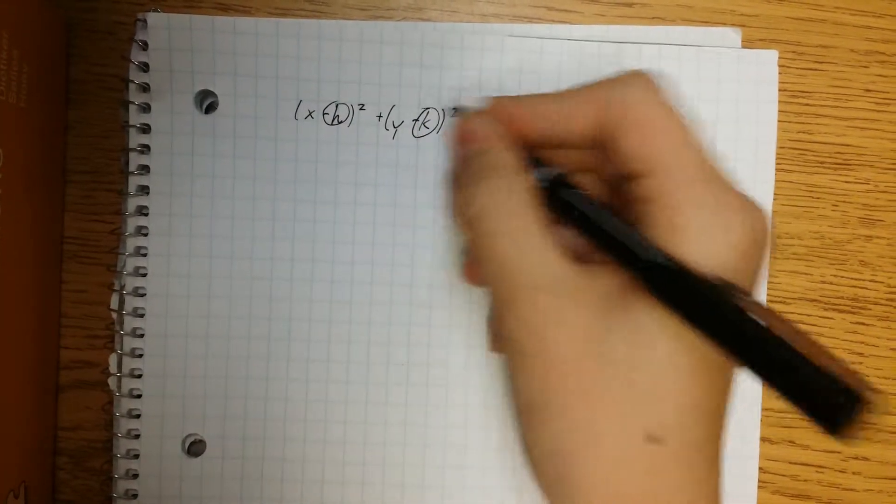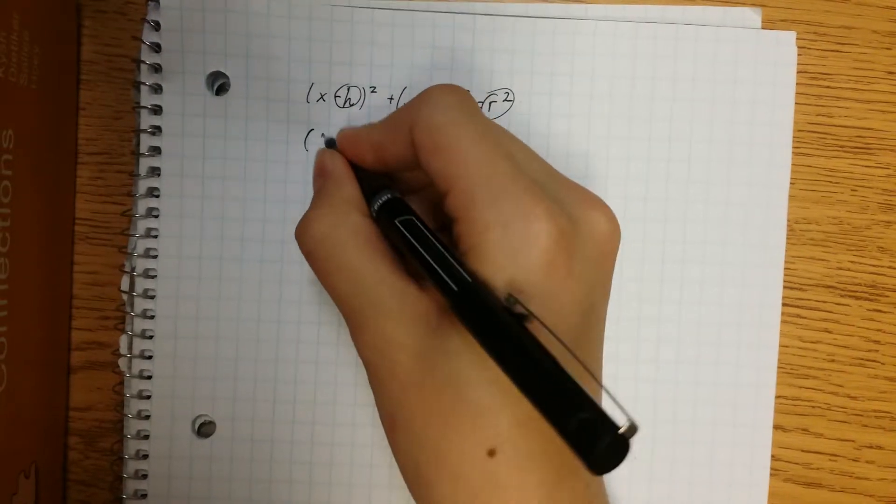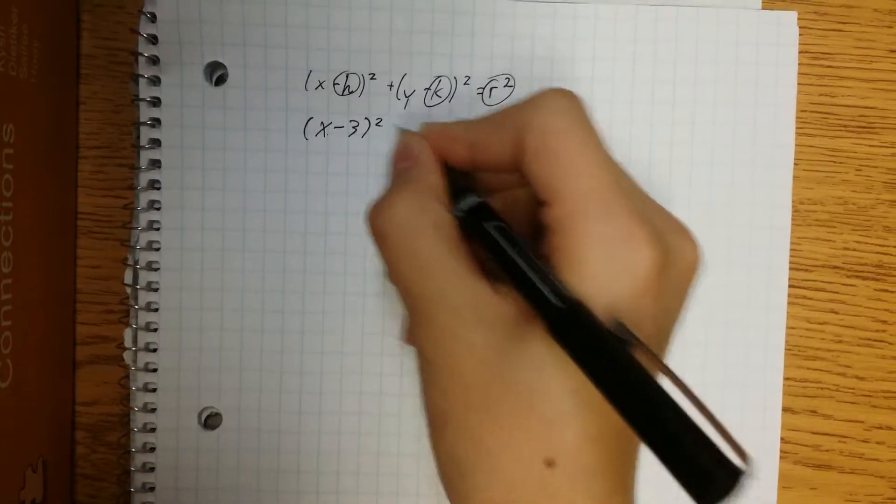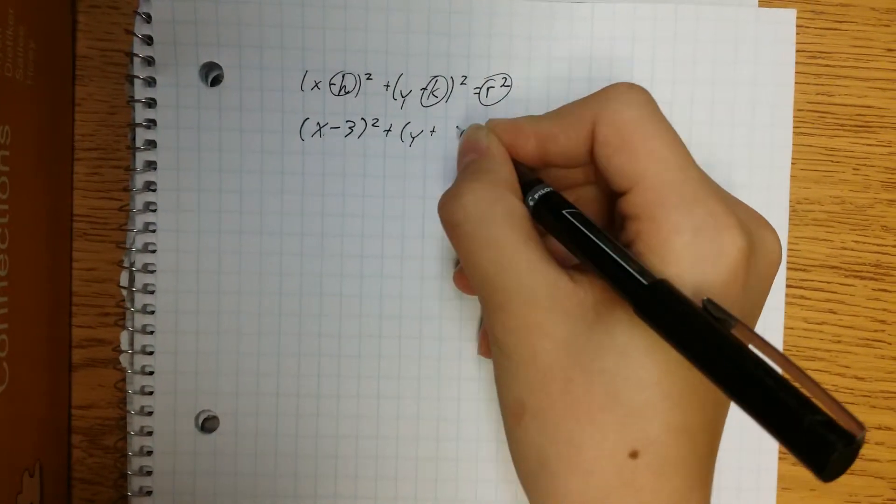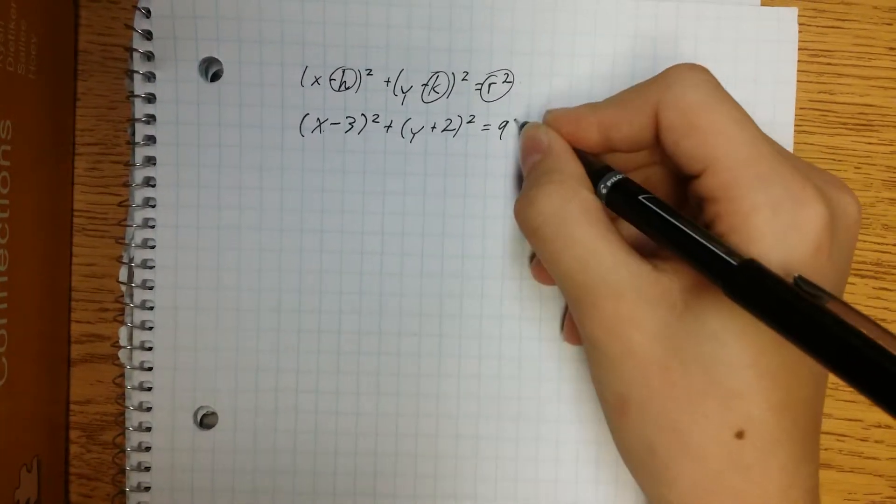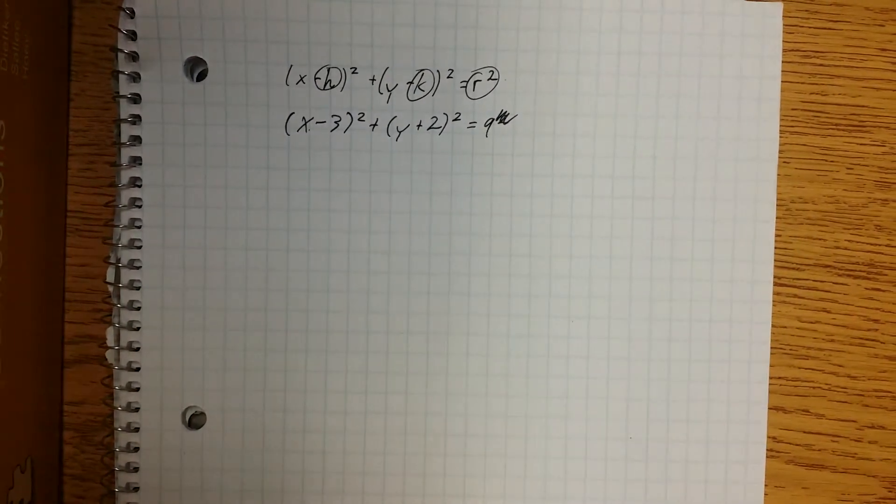So we're going to fill in the blanks. Our problem is x minus 3 squared plus y plus 2 squared equals 9. Okay, not squared—I meant just 9.